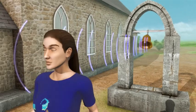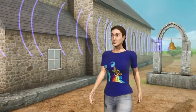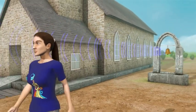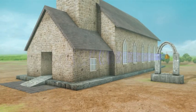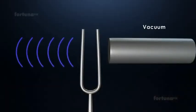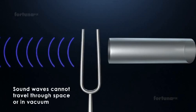If we happen to be in the range of these waves, we'll hear the sound emanating from the bell. Meanwhile, the sound waves will continue spreading out until they lose their energy. Sound requires a medium to travel through, meaning molecules or particles are necessary to carry the sound wave. The vacuum of outer space has no molecules, and so sound waves cannot travel through space or in a vacuum.